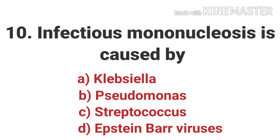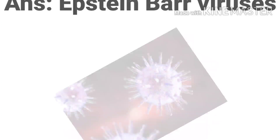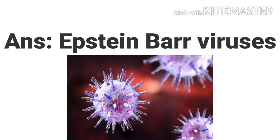The tenth question is: infectious mononucleosis is caused by Klebsiella, Pseudomonas, Streptococcus, or Epstein-Barr virus? The answer is Epstein-Barr virus. Infectious mononucleosis is caused by Epstein-Barr virus.